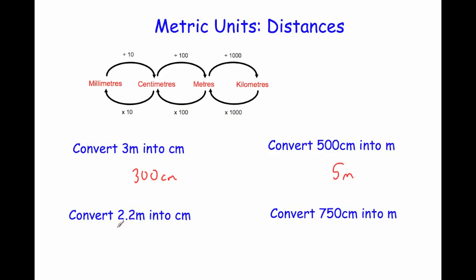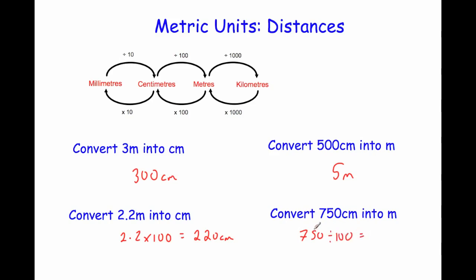Convert 2.2 meters into centimeters. We're going to times by 100, so 2.2 times 100 — we move the digits two places to the left — giving us 220 centimeters. And finally: convert 750 centimeters into meters. To change from centimeters into meters we divide by 100. So 750 divided by 100 equals 7.5 meters.